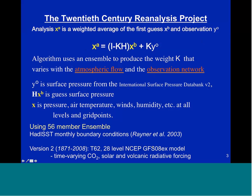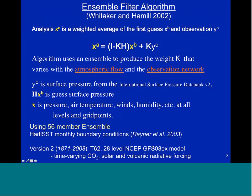I want to briefly talk about the ensemble filter algorithm we use to produce the dataset. The idea is to produce an analysis — the vector XA — as a weighted combination of a first guess XB and the observation YO. Our observations are only surface pressure. The weight matrix K, the gain, will vary in our system with the atmospheric flow and with the observation network, so that when observations are very sparse, we give more weight to the observations.